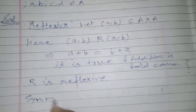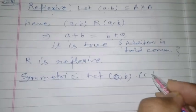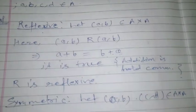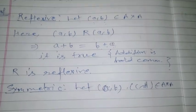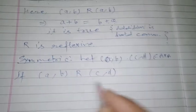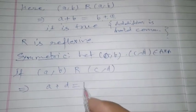Next we prove the relation is symmetric. A common mistake students make is taking elements (a,b) and (b,a) — that is wrong. For reflexive we take (a,b); for symmetric we take two elements (a,b) and (c,d) from A×A. For symmetry, if (a,b) R (c,d) is true, we have to show that (c,d) R (a,b). From the given relation, if (a,b) R (c,d), then a+d = b+c.